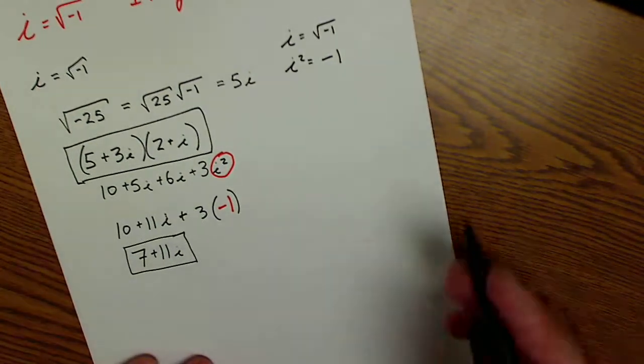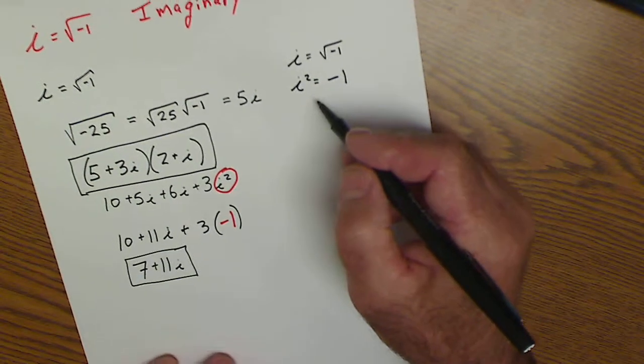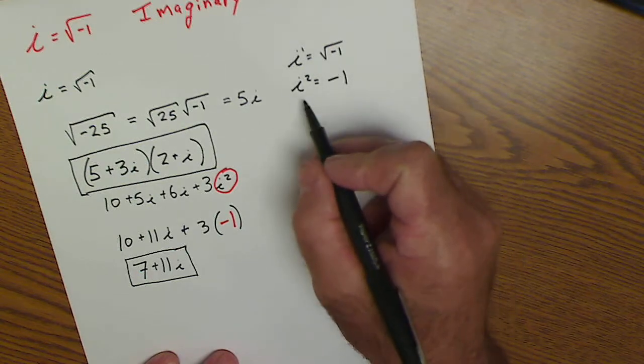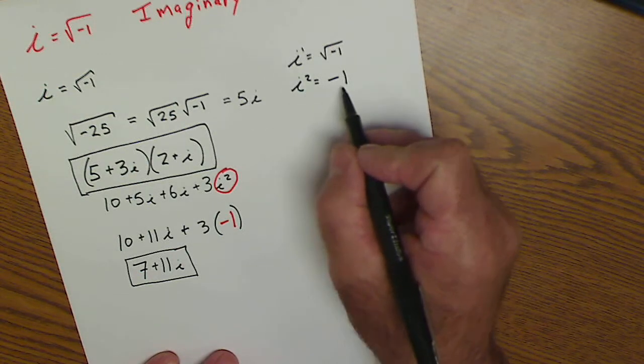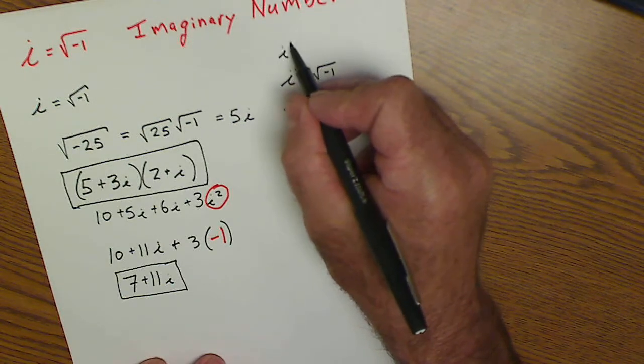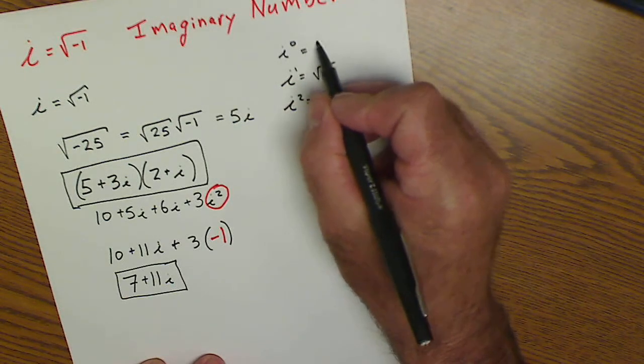And then the third way you might see it is going back over here. So again, i to the first is equal to square root of negative 1. i squared is equal to negative 1. I know anything to the 0 power is equal to 1.